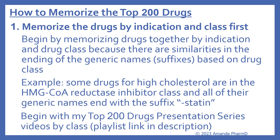So now we'll look at how to memorize the top 200 drugs. Number one, memorize the drugs by indication and class first. You don't want to start by memorizing individual drugs — begin by memorizing drugs together by indication and drug class because there are similarities in the endings of the generic names. These are called suffixes, and they're based on the drug class. For example, some drugs for high cholesterol are in the HMG-CoA reductase inhibitor class and all of their generic names end with the suffix 'statin.' A good place to start is my top 200 drugs presentation series videos organized by class — I'll put the playlist link in the description.